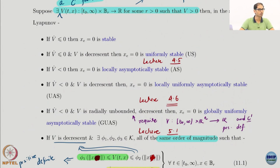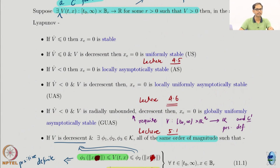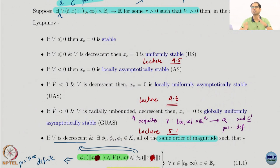Some key words are associated with some results: positive definiteness is connected to stability and asymptotic stability; negative definiteness gives you asymptotic stability; decrescence is connected to uniform properties; and radially unboundedness is connected to global properties.